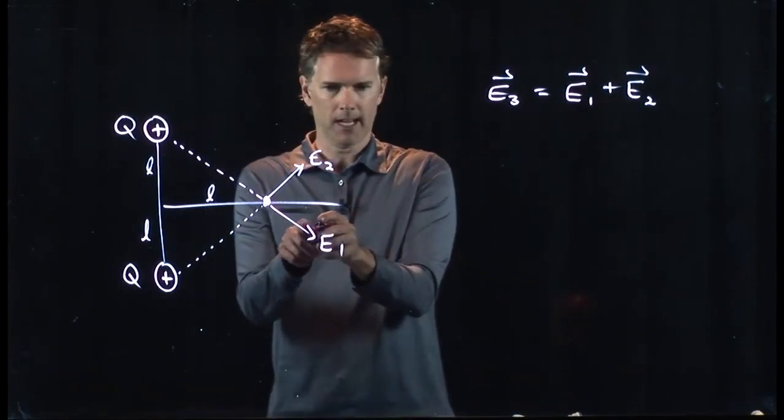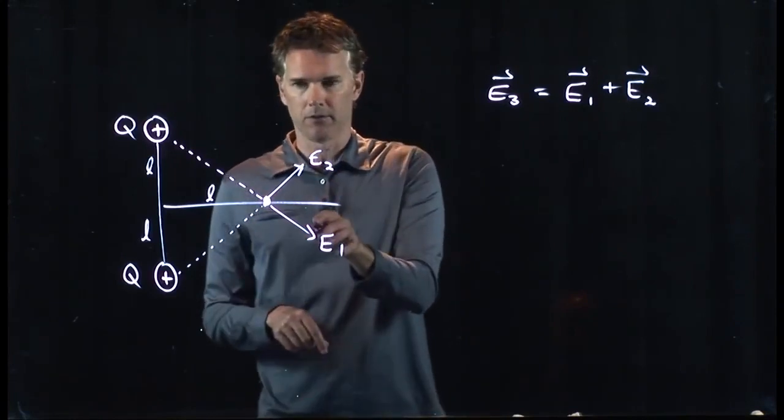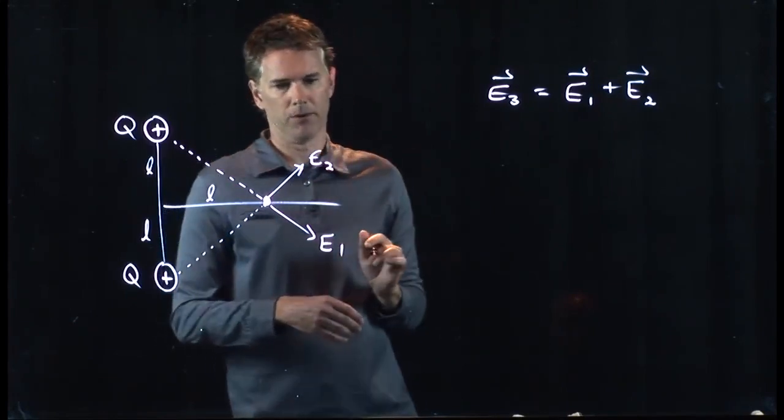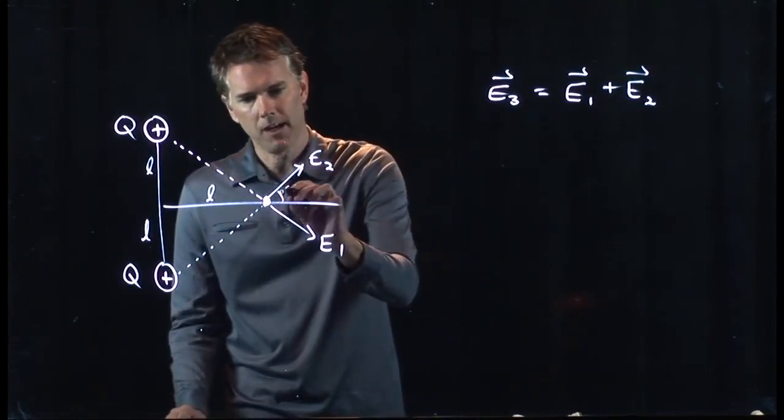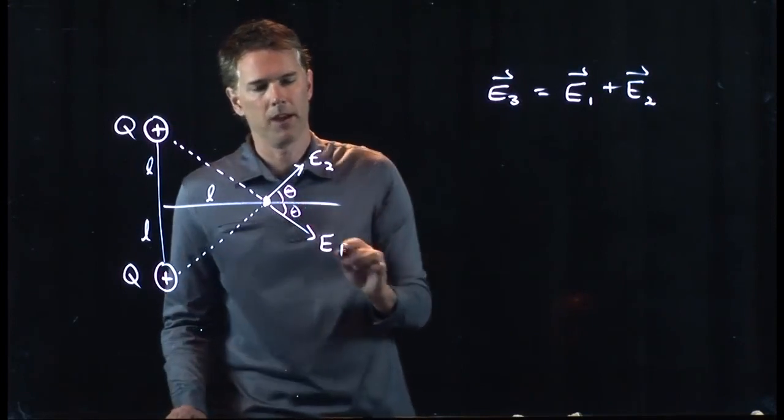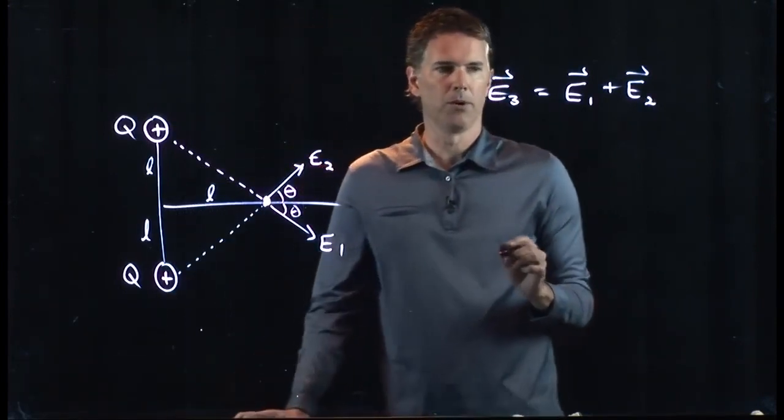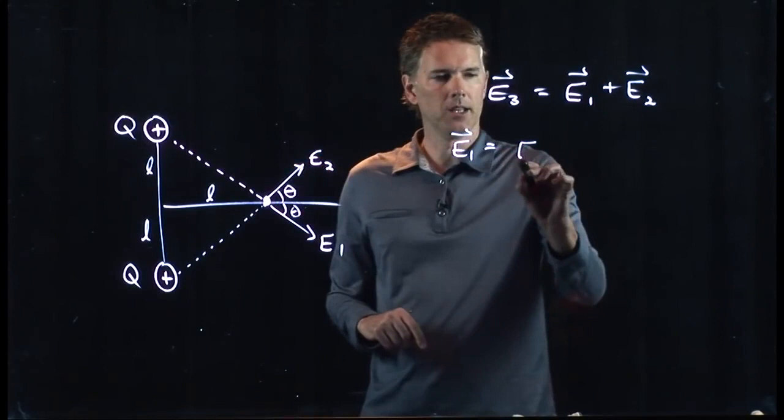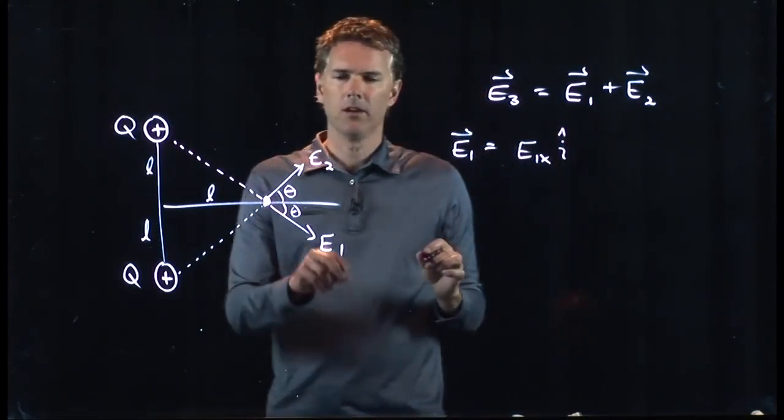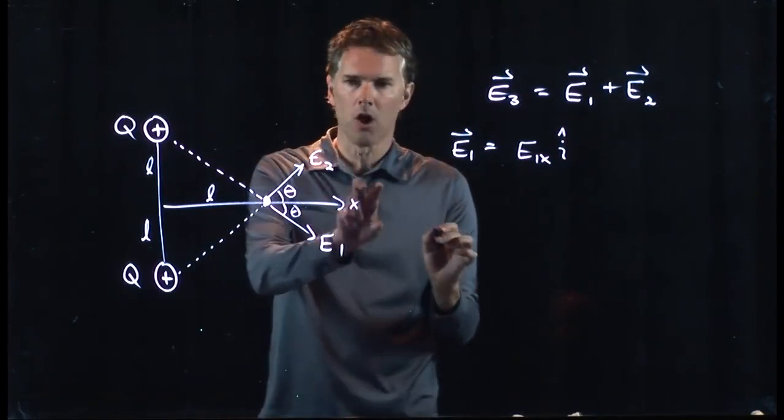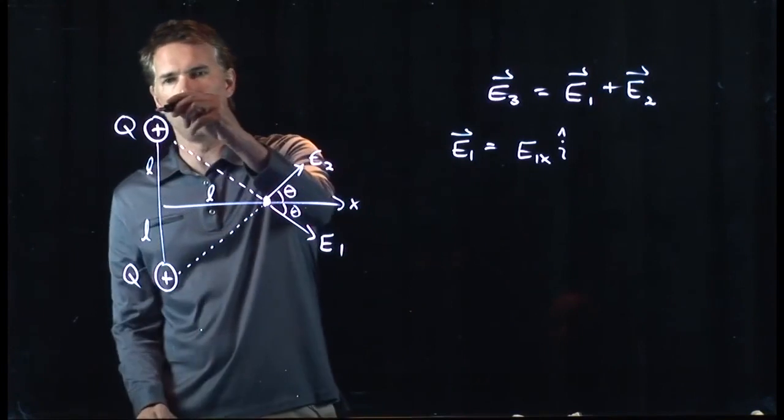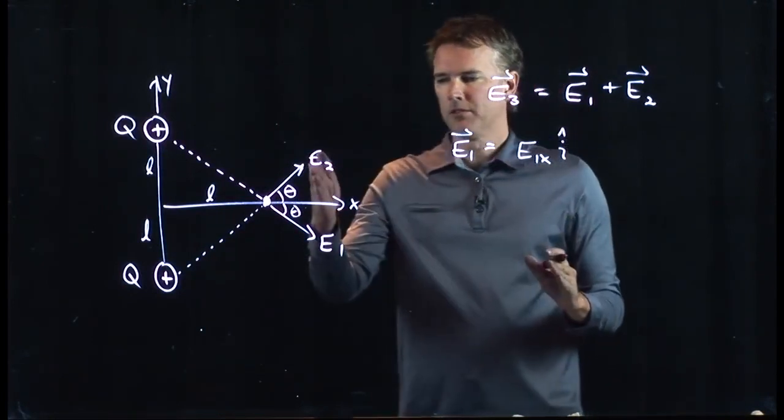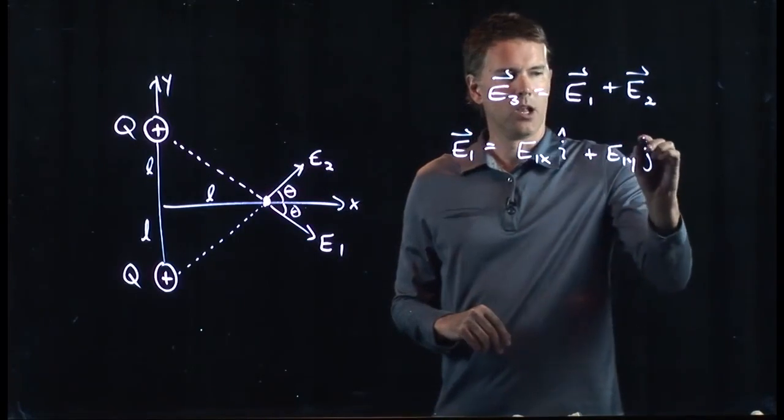And now we have to be a little bit careful about determining what those vector components are. E1 is at some angle. It has some horizontal component and it has a vertical component. And if we call this angle theta, which means this is also angle theta, now we can determine what some of those components are. E1 is just going to be some x component, E1x in the i-hat direction. Remember, i-hat is a unit vector along x.